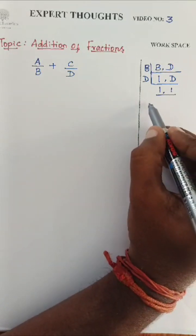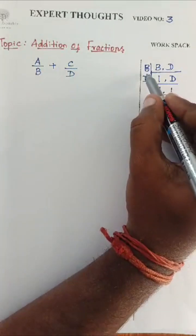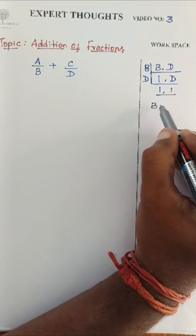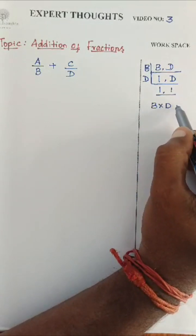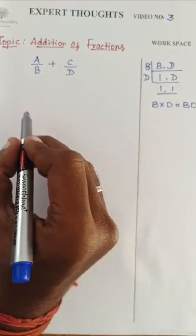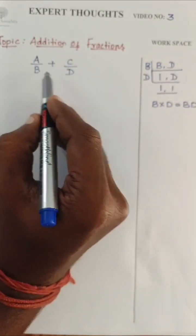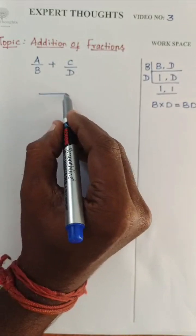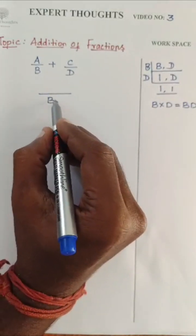Now, the LCM will be B into D. B into D, which is nothing but BD. So, these different terms, I will take as single terms BD.